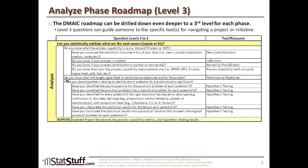The next level two question is: do you know what the target sigma level or performance objectives are for the project? Now that you know the process capability, you can compare it to the voice of the customer (VOC) and set your performance objectives. The following level two question is: have you done hypothesis testing to identify which potential Xs are statistically significant? If you can't answer yes to that, here are the level three questions that guide you through hypothesis testing for analyzing each X.